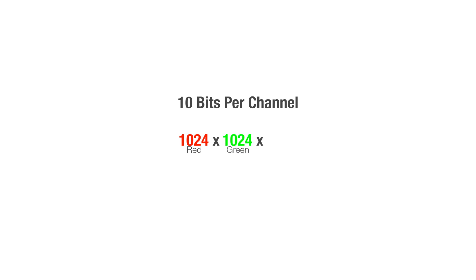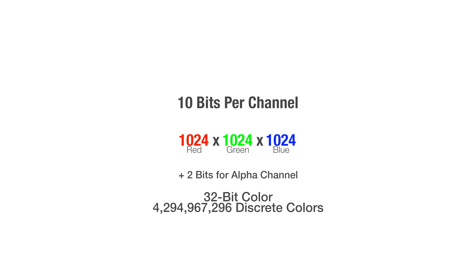10-bit equates to 30 bits of color, however two bits are reserved for the alpha channel, making a total of 32 bits of color. 10-bit images can display more than a billion colors. Those are a lot of numbers, but what does it all mean?